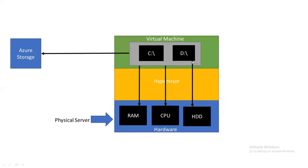Because the temporary disk is accessed from the local hard disk, whenever you stop your virtual machine, resources get deallocated — meaning RAM, CPU, and also this hard disk connection are removed. So the D drive loses control of this local disk, and whatever data you stored in it will be lost. Also, when you start your virtual machine again there is no guarantee it will be deployed on the same physical server — it may deploy on a different one, and the D drive will capture the local hard disk of that different server.